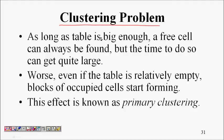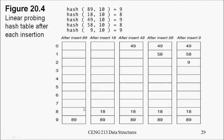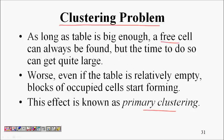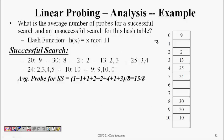The problem here is called the clustering problem. As long as the table is big enough, you will always find a free cell, but the time to find it becomes larger. A cluster forms when many consecutive cells are filled — if you hash to the start of the cluster, you have to probe all the way through it. That's why the load factor lambda should be less than 0.5.